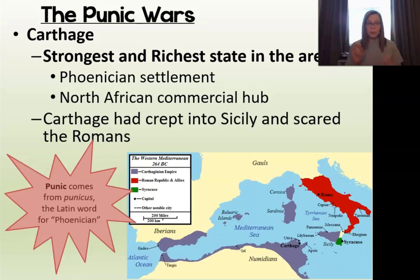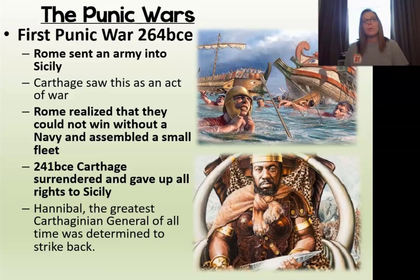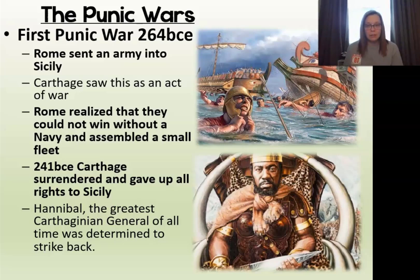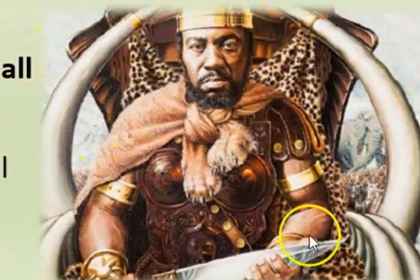Carthage was a Phoenician settlement located in North Africa in a very important commercial hub. The first Punic War starts in 264 BCE. Rome sends an army into Sicily and Carthage saw this as an act of war. Rome realized that in a battle with Carthage they couldn't win unless they had a navy, so they put together a small fleet. In 241 BCE, Carthage surrenders and gives up all its rights to Sicily. Carthage was led by Hannibal, considered the greatest Carthaginian general of all time, who was not happy about the end result of the First Punic War and was determined to strike back.